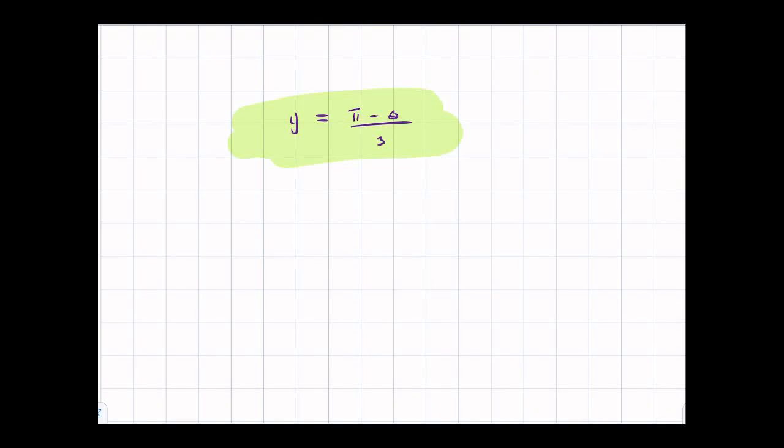Okay, so we have this question about derivatives, about the derivative of this function, just this example function. This is y equals pi minus theta over 3. So y is a function of theta here, and pi and 3 are constants.